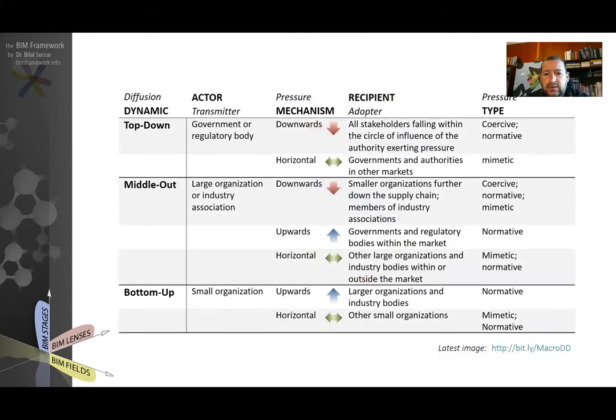This table here summarizes all these dynamics, mechanisms, and types. You've got the top-down which includes both downward and horizontal mechanisms of the types coercive, normative, and mimetic. Middle-out with large organizations or industry associations which exert downward, upward, and horizontal pressures. And finally bottom-up with small organizations exert upward and horizontal pressures.